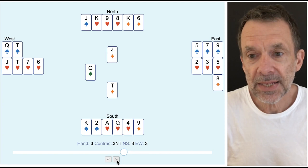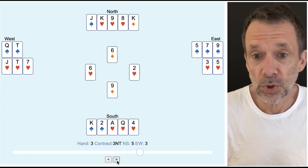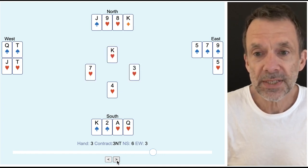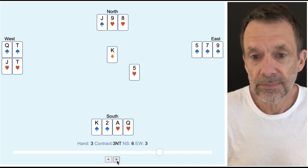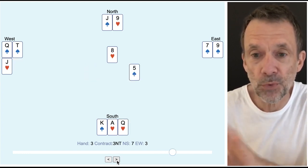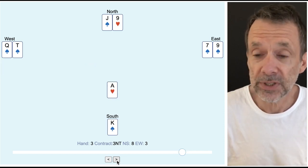Now on this hand east had three clubs and west had five clubs so this worked great. It may have been that the clubs were four in the west hand and four in the east hand. Well that wouldn't have mattered because if clubs were four in one hand and four in the other hand I would have only lost three club tricks.